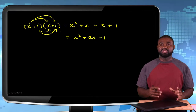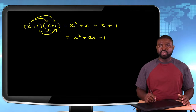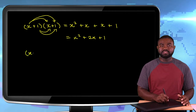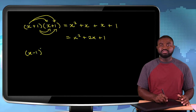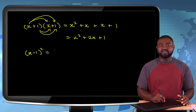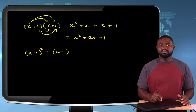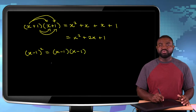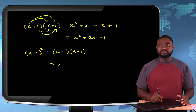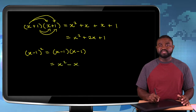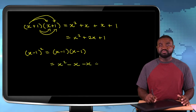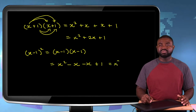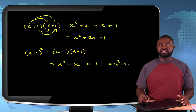So X plus 1 all squared expands to X squared plus 2X plus 1. Expansion is the removal of brackets. Similarly, X minus 1 squared is the same as X minus 1 multiplied by X minus 1. Expanding gives us X squared minus X minus X plus 1, which is X squared minus 2X plus 1.